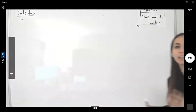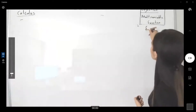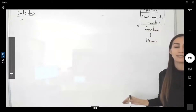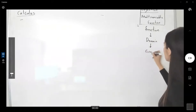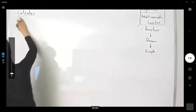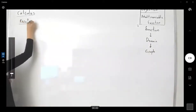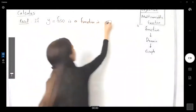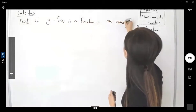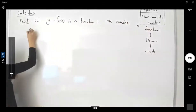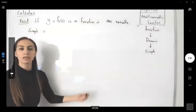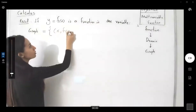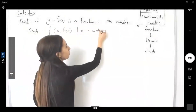When we're talking about functions in general, what is interesting about functions is the domain of the function, the range of the function, and also the graph of the function. Recall that if y equals f of x is a function in one variable, then the graph of the function is defined as the set of points in the plane — the set of all x comma f of x, or y values, such that x is in the domain of f.